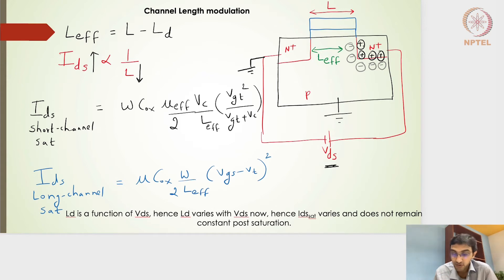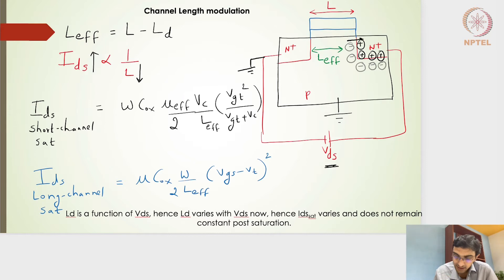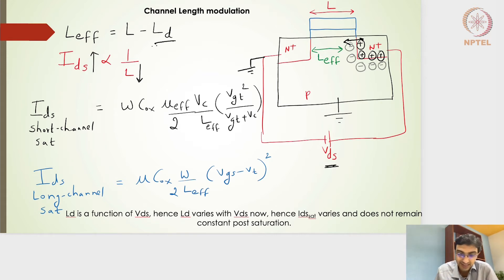This leaves behind a large amount of immobile positive ions. On the other side of the junction, a similar effect is seen and we get many immobile negative ions. This depletion region closer to the drain side increases as we make VDS larger and larger, represented by the variable LD. So the effective channel length decreases as we increase the drain potential.